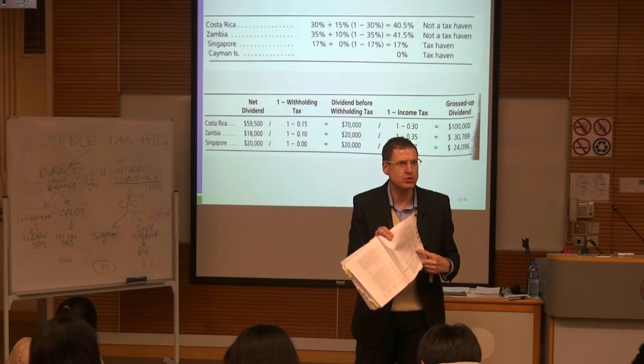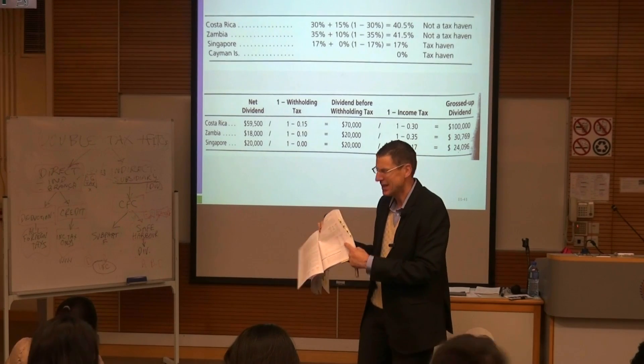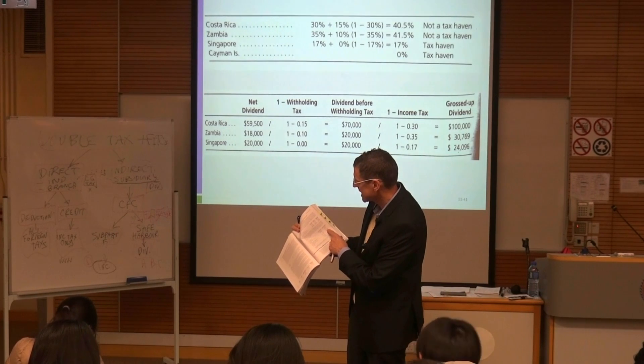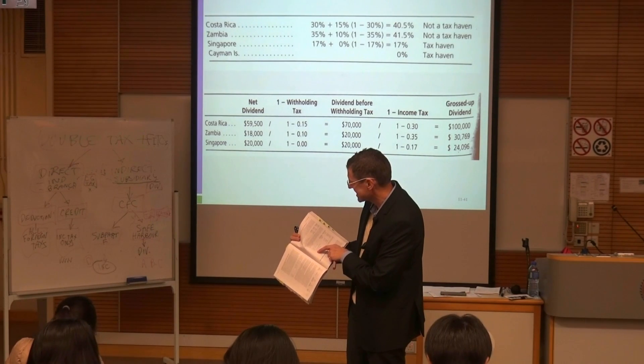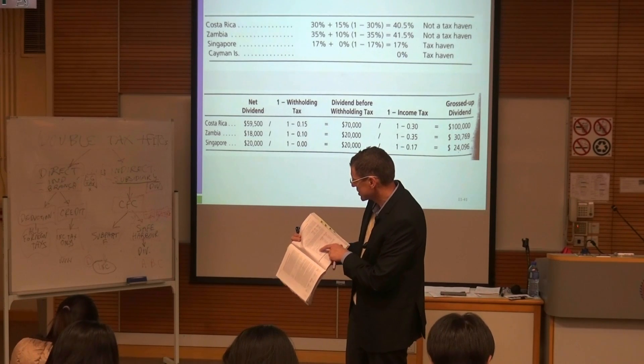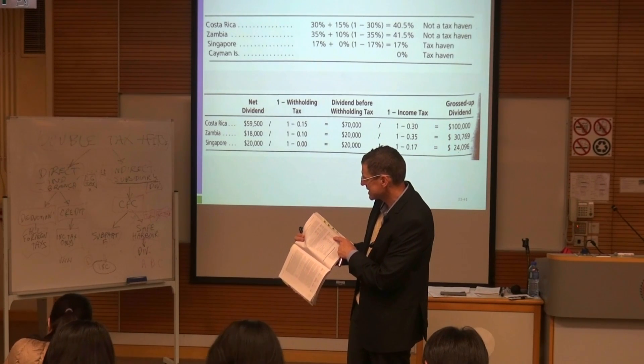What you've got on the general income is the total of the other three countries, the total of A, B, and C. Notice the 57,365, that's the total taxes paid.